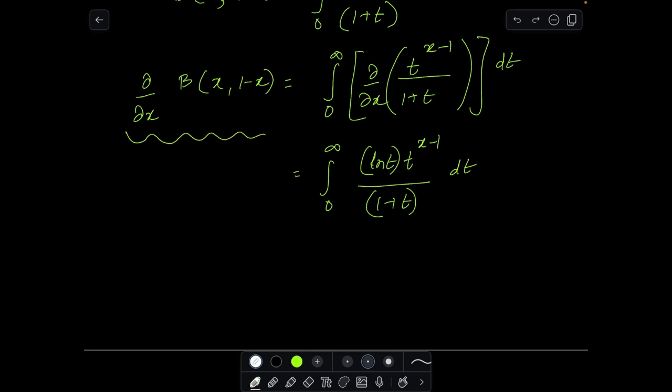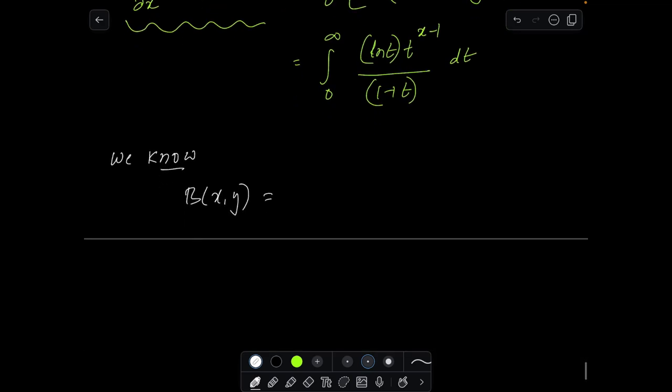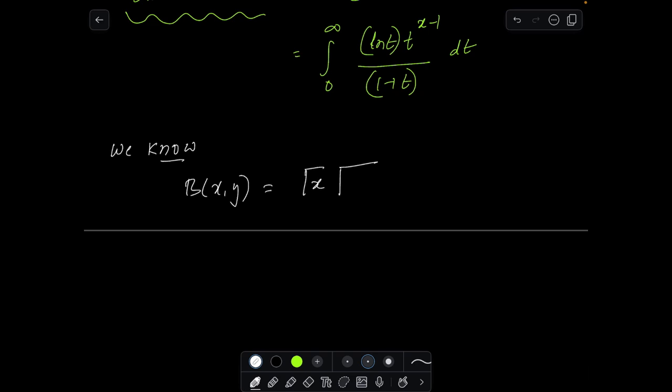Obviously we need to know what is this result now. So we all know this: that beta x comma y can be written as gamma x gamma y by gamma x plus y. This is a conversion of beta function into gamma function.